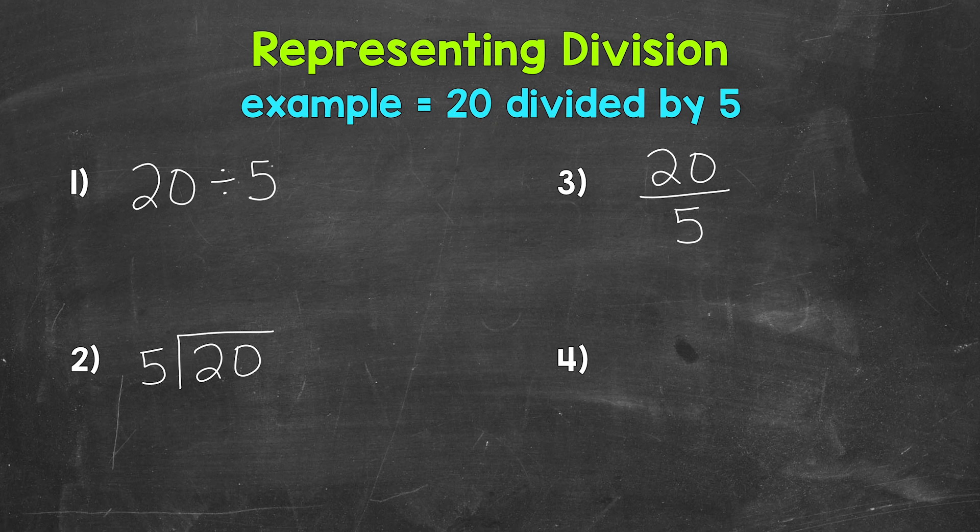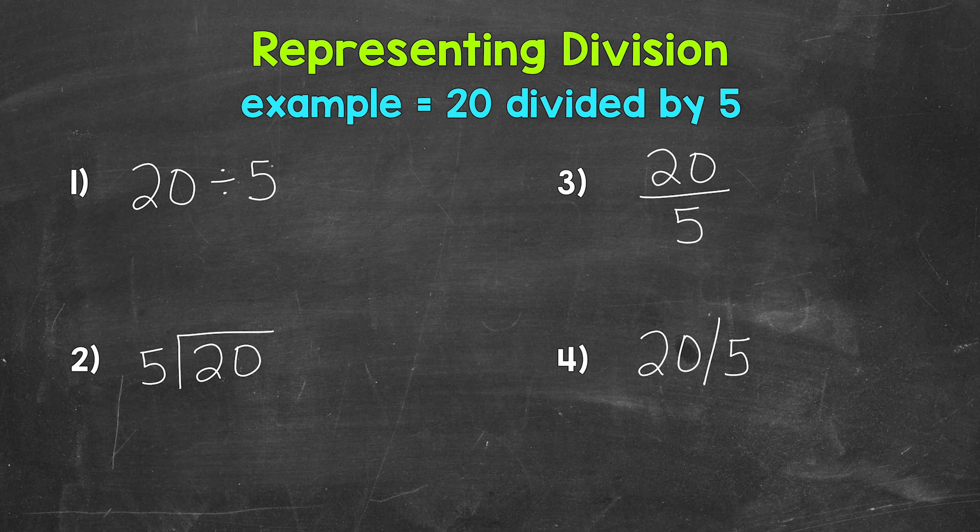Lastly, we have the forward slash. So 20 divided by 5. That slash also represents division, with the first number being the dividend, the number we are dividing, and then the second number being the divisor, the number we are dividing by.